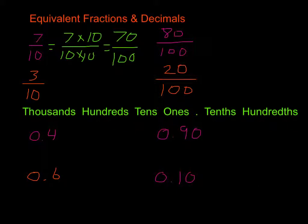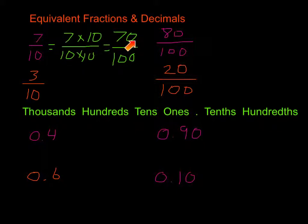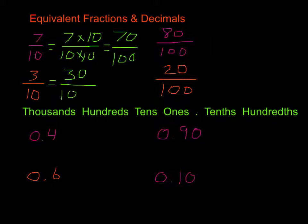We know that because when we multiply by tens, hundreds, and thousands, we're multiplying our 1 times 1 which gives us 1, and we add our 2 zeros, giving us 100. And 1 times 7 is 7 with 1 zero, giving 70. For our next one, we have 3 tenths. To get to hundredths, when I multiply by 10, all I'm doing is adding a zero to the numerator and to the denominator. So that gives me 30 one-hundredths.